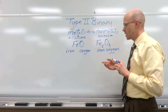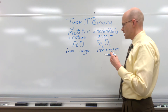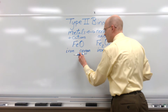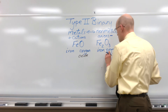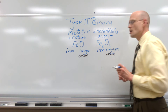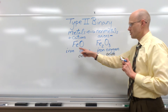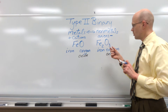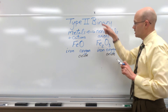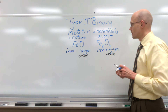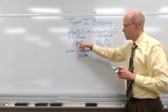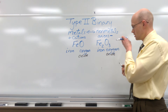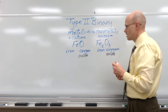Similarly to Type 1 compounds, we take the anion involved — which would be oxide — and change that ending so that we have 'oxide' to represent the anion. But both of these compounds cannot simply be called 'iron oxide,' because if they were, how would we know which iron oxide? So we have to add an additional detail: when naming Type 2 binary compounds, we must label the charge on the cation in the name to differentiate between FeO and Fe₂O₃.